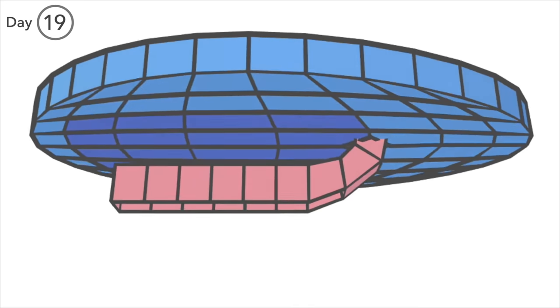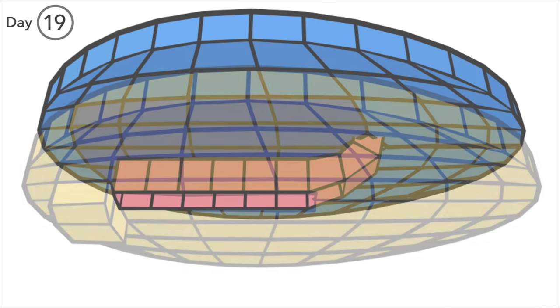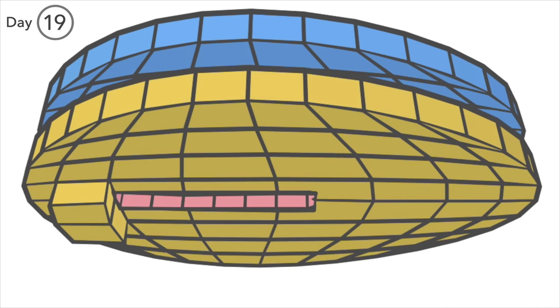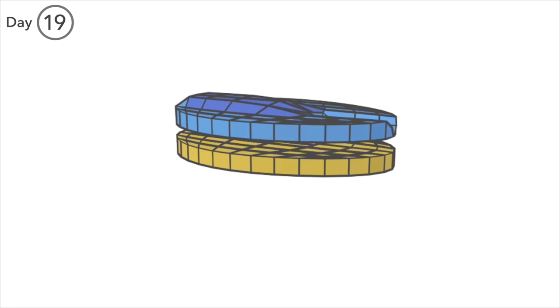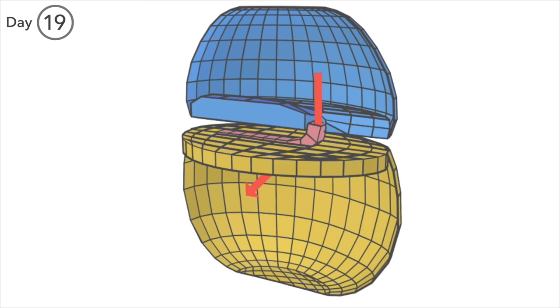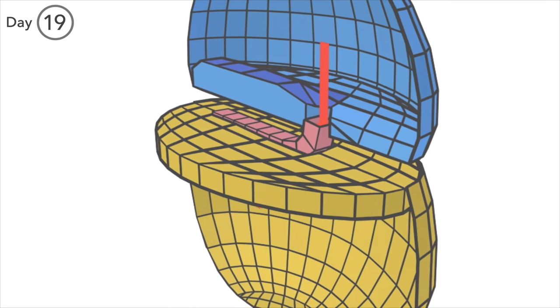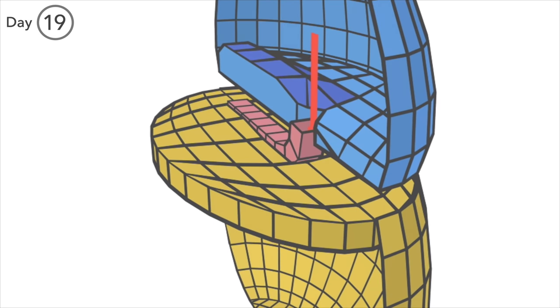Day 19. The notochordal process partly fuses with the endoderm now and is known as the notochordal plate. Given that the notochordal process was hollow, this means that now there's a passage between the amniotic cavity and the yolk sac from the primitive node down through the endoderm.